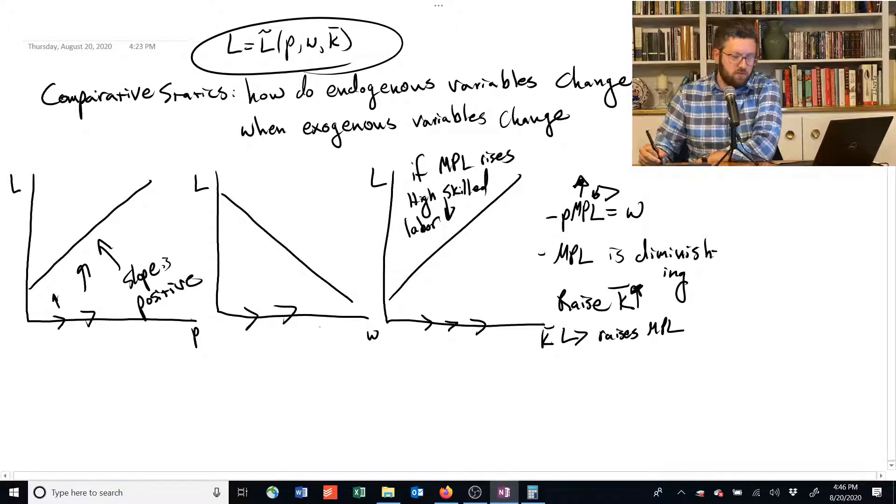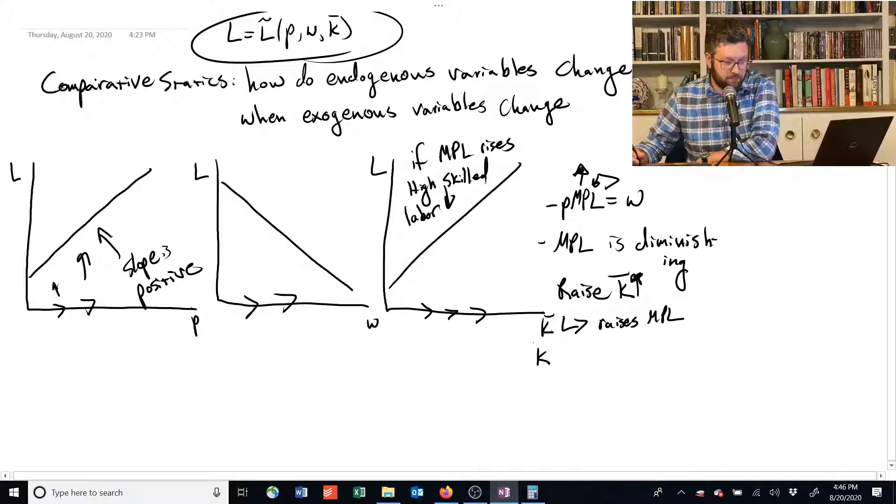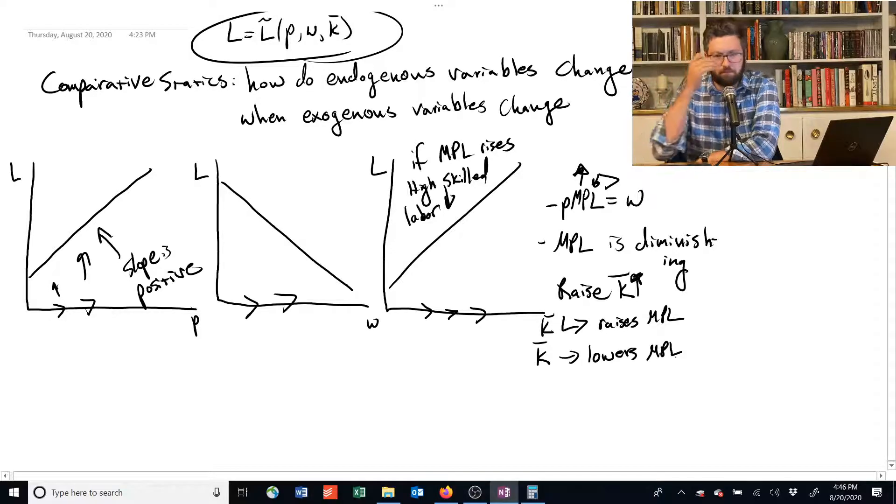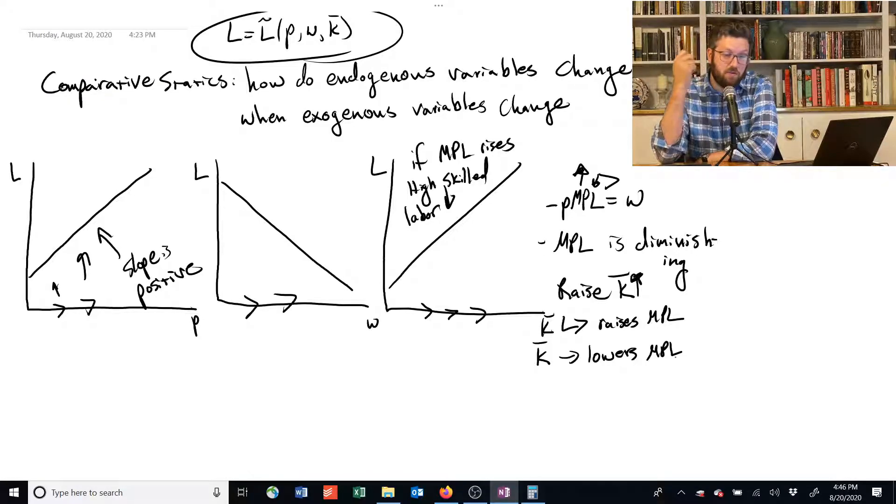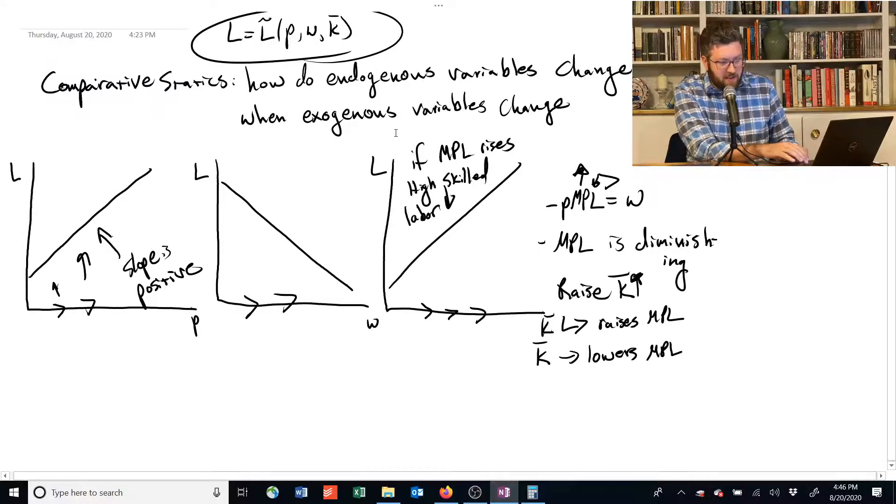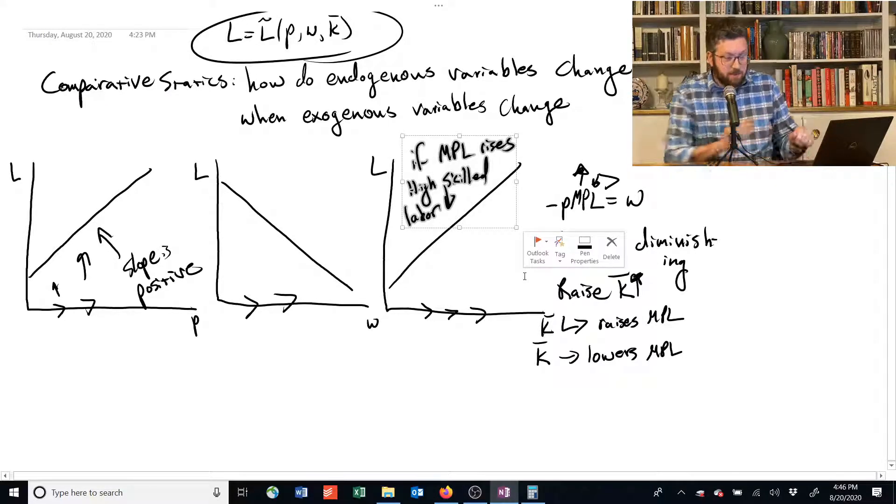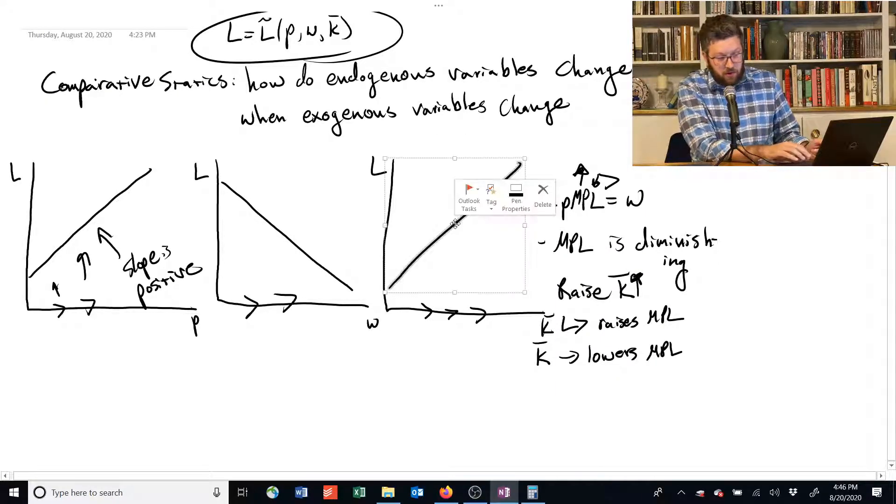We could also, though, assume the opposite. Suppose that K lowers the marginal product of labor. However, this can occur if the goods are substitutes. If you no longer, like, if basically they crowd out and you don't need these other guys. If that's the case, then basically the opposite story holds.